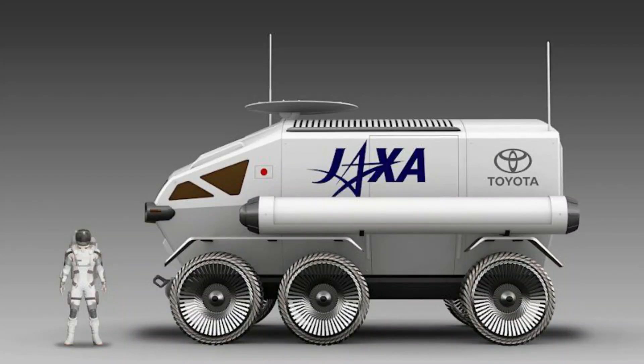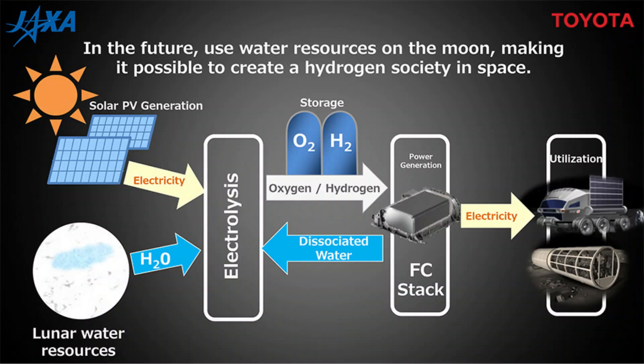Fuel cells have been used in NASA's lunar vehicles — both SOFCs (solid oxide fuel cells) and PEM (polymeric electrolytic membranes). These fuel cells are used in lunar vehicles due to limitations in fuel supply and solar panels, requiring alternative ways to produce electricity.